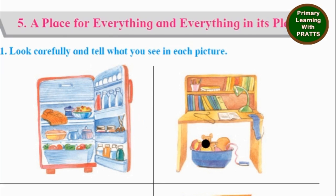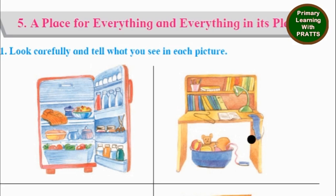Now let's look at the study table. So what is out of place? A clothes hanger and a sock — these two things are out of place.